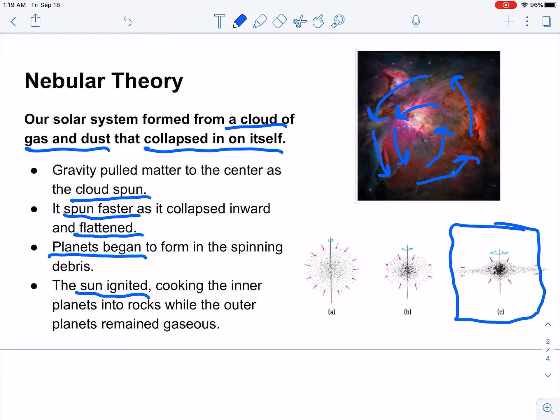The sun ignited, actually, technically after some of the planets began to form. It cooked the inner planets. That's why they are solid and rocky, whereas the more distant outer planets remained gaseous.